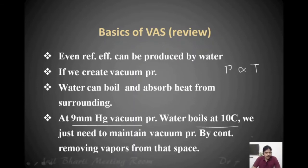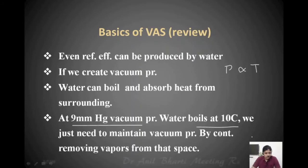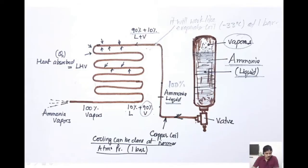So we have designed refrigerants — special liquids that can boil even at atmospheric pressure of 1.01 bar. For example, ammonia can boil at normal atmospheric pressure. If we boil ammonia at normal pressure, it boils at minus 33 degrees Celsius — that is how low a temperature it can maintain. This is a cylinder containing liquid ammonia at around 10 bar pressure with a valve.